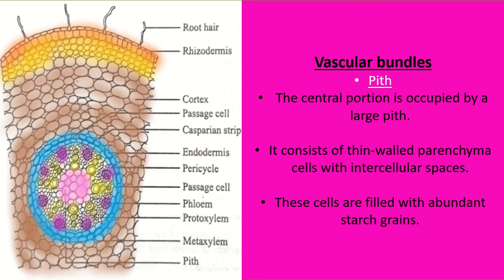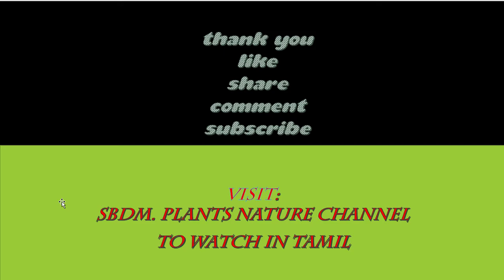Pith occupies the large central portion and is made up of thin-walled parenchyma cells with intracellular space. The pith cells also store abundant starch grains. This concludes the primary structure of monocot root, or the transverse section of monocot root. Thank you so much for watching.